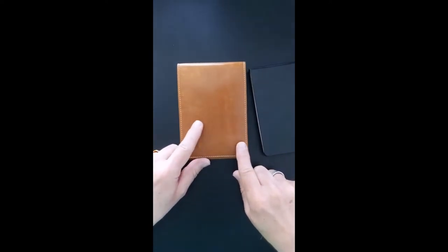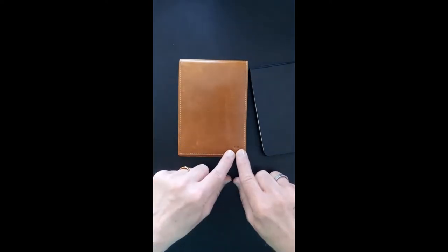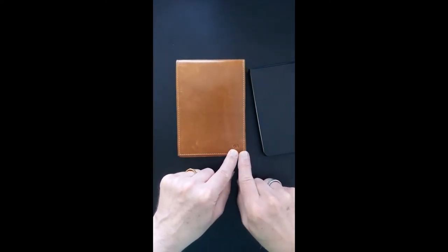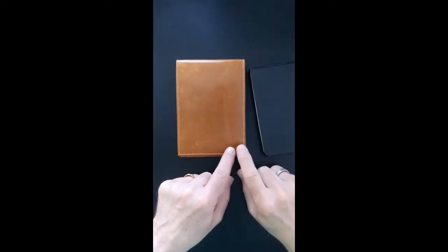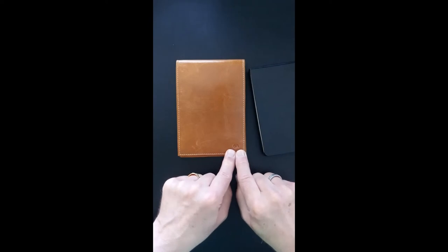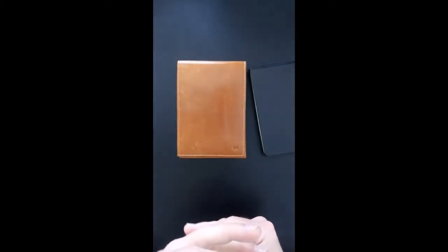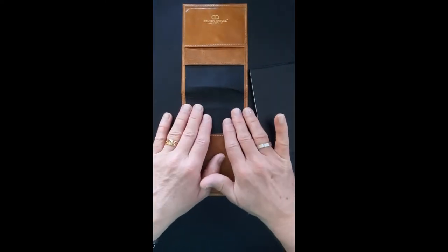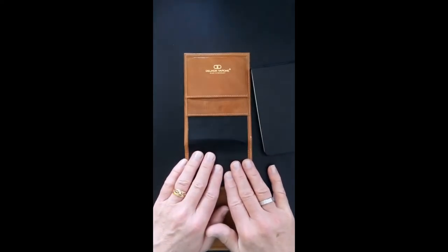It's not a big thing to carry around with you if you don't want to be hefting these great big folders around. On the outside it just has my initials, which is a free service from Delmon Verone. You can ask to have your initials put on. If you wanted gold embossing or whatever, it costs money, but this is free. Inside it has black leather lining, the Delmon Verone logo with Made in Germany written on it.